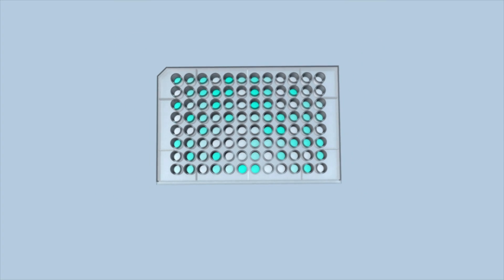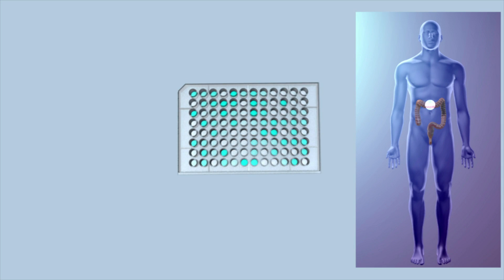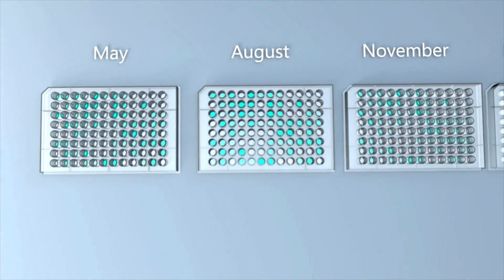By examining the combination of modifications present in the sample, VolitionRx's technology can identify their specific cancerous origin and track the effectiveness of treatment over time.